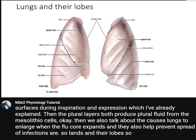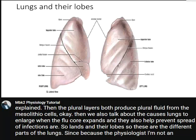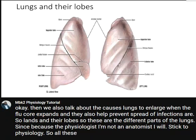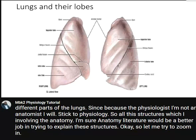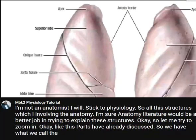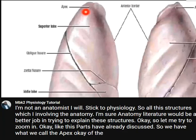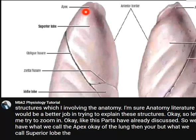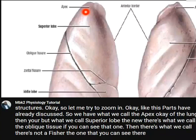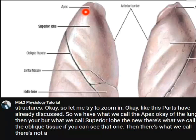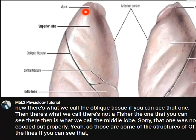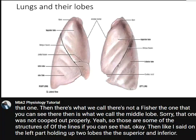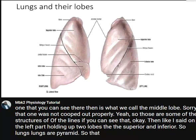Now looking at the lungs and their lobes — since I am a physiologist and not an anatomist I'll stick to physiology. Zooming in: we have the apex of the lung, the superior lobe, the oblique fissure, the horizontal fissure, and the middle lobe on the right lung. As noted earlier, on the left part we only have two lobes: the superior and the inferior.